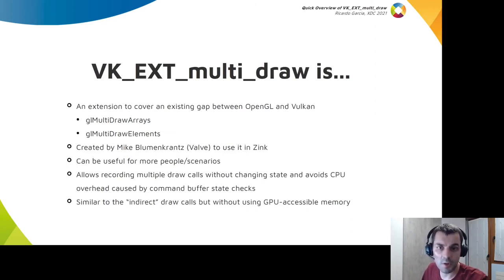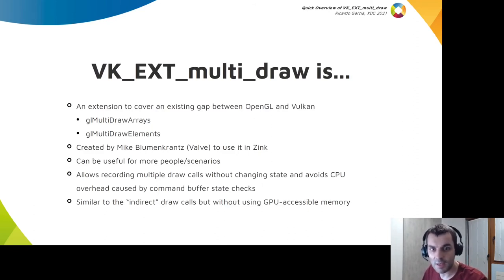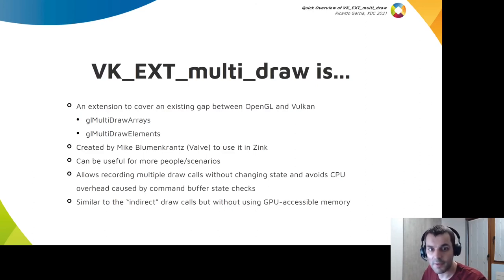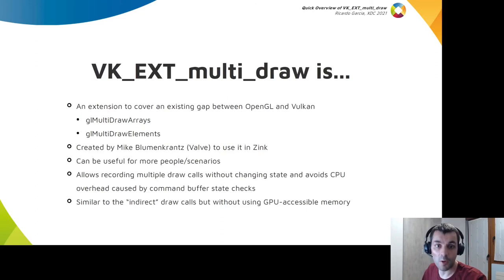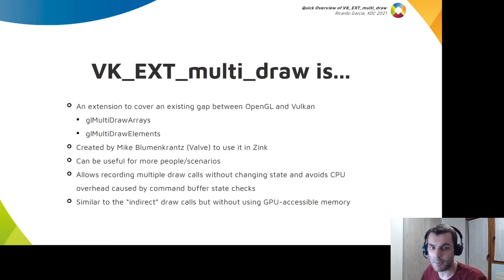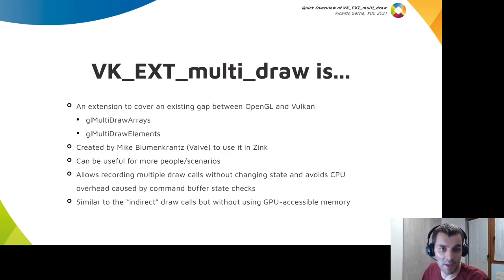Mike Blumenkrantz, working as a Valve contractor, created the extension to use it in Zink and to ease implementing that part of OpenGL on top of Vulkan - though the extension can be useful for more people and situations. With this extension, you can record multiple draw calls without changing state between each call using a single function call, avoiding the typical CPU overhead caused by checking common buffer state per draw call. If you're working on a Vulkan implementation, you can also use this extension as a reference to improve the efficiency of state checking in draw calls.